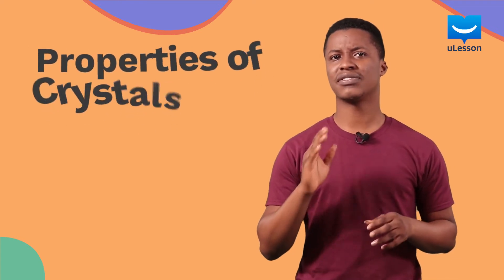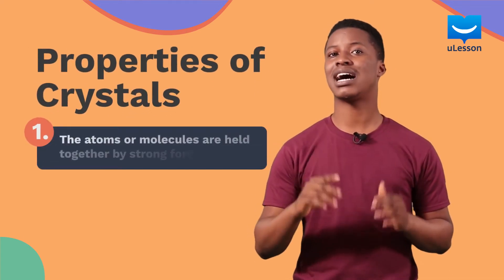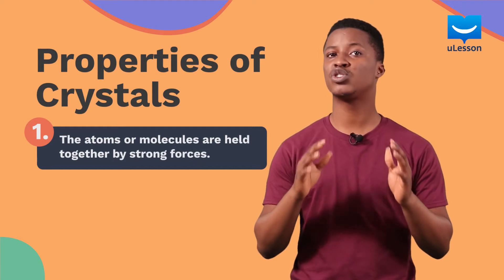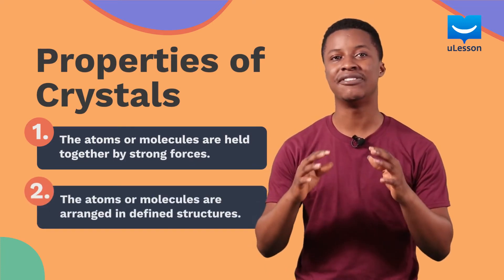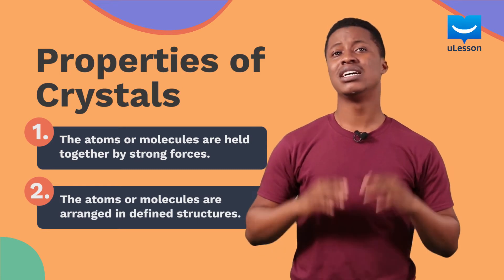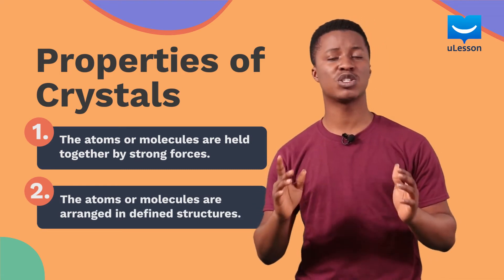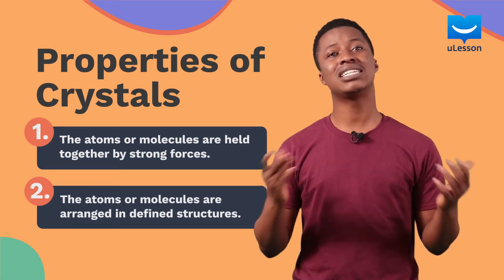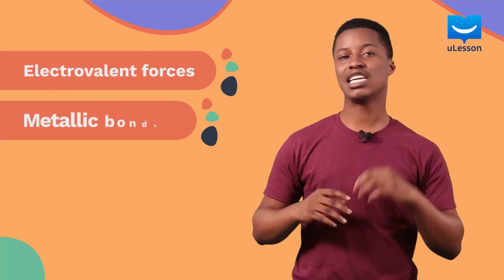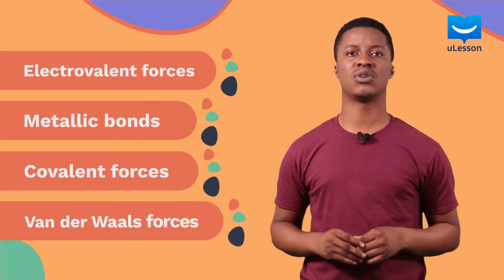These are the two important things you need to know about crystals: one is that the atoms are held together by strong forces, and that the atoms are arranged in a defined structure. It is important to understand that these defined structures are not all the same. The forces that hold crystals together are different in strength. They could be electrovalent forces, metallic bonds, covalent forces, or even van der Waals forces.